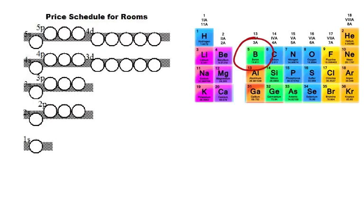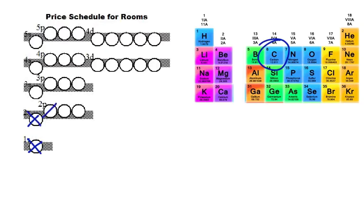For boron with five electrons: four fill the 1s and 2s, and the fifth goes into the second floor penthouse-type room. Now for the sixth electron — carbon — a little surprisingly, it goes into a different second floor penthouse room rather than doubling up. Since electrons are negative, it's better to have them in separate rooms before doubling them up when there are multiple rooms at the same price.